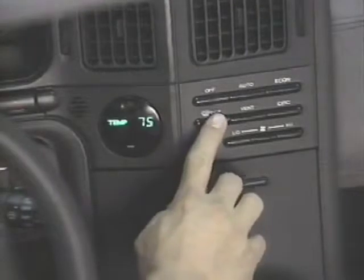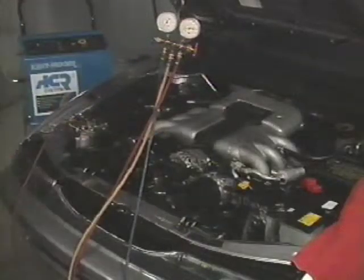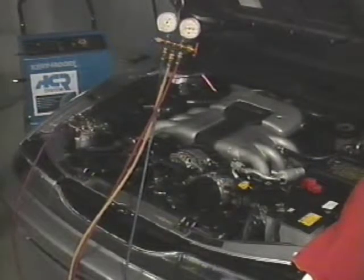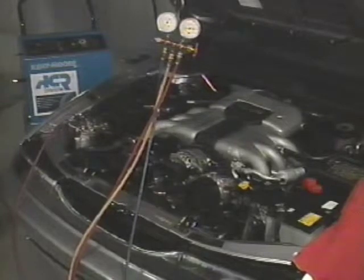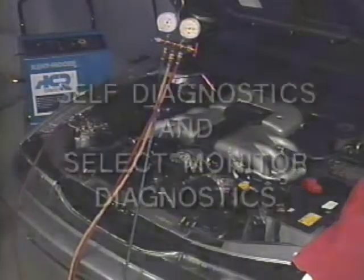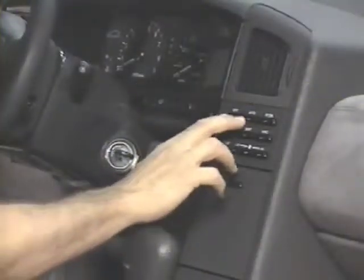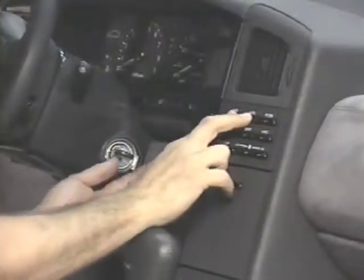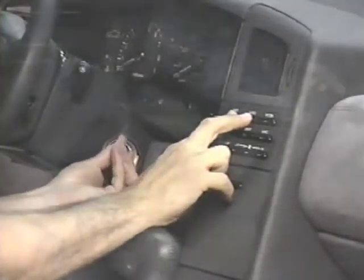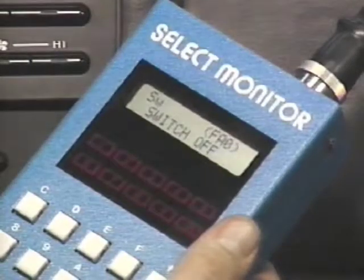After these checks, test the compressor on and off operation and the sight glass. Install pressure gauges to the high and low sides of the AC system and check for proper refrigeration system pressures. The SVX Auto HVAC system has two options for diagnosis: a self-diagnostics program built into the system and the Subaru Select Monitor.